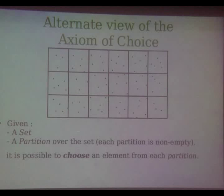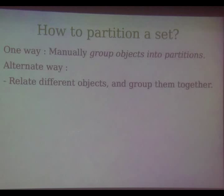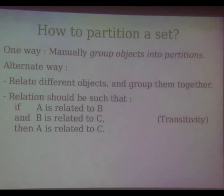How to partition a set? One way is to manually put objects into boxes. But another way is to relate different objects — as happens in chemistry where you group elements according to properties. The relation should be such that if object a is related to object b, and object b is related to object c, then a and c should also be related — this is called transitivity. If I can find such a relation, I can group related objects into one partition, and this naturally induces a partition over the set, similar to dividing the animal kingdom into families.